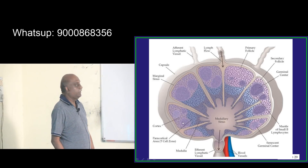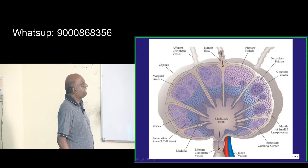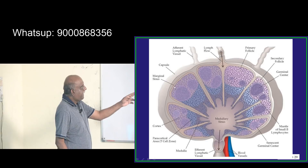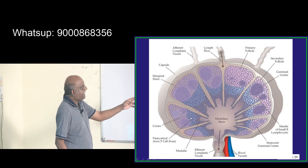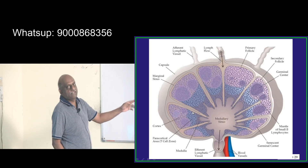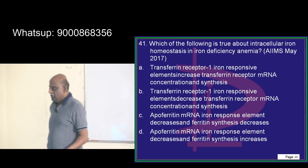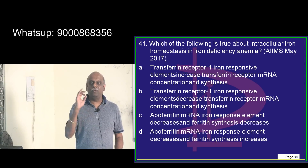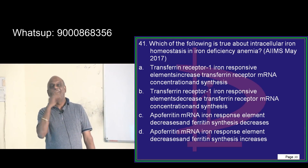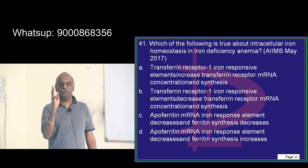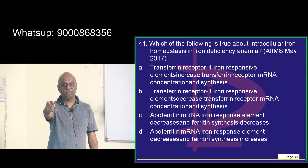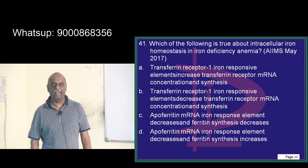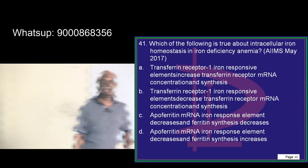Once more: this is the cortex, this is the medulla, you have a capsule, a marginal sinus, germinal centers, secondary follicles, and the paracortical area is the T cell zone. On November 18th entrance exam, lymph node, spleen, and thymus were suddenly asked. That is the whole idea. Thank you.